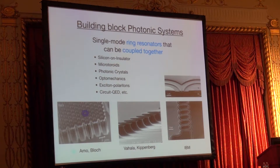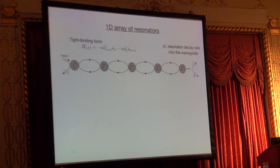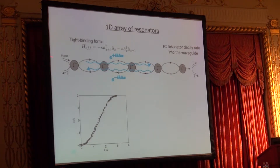The key ingredient we really want is to have ring resonators that can be coupled together. The easiest one is to couple them in a one-dimensional array. Here we have a one-dimensional array of ring resonators coupled to each other. The photons are confined in these resonators at the resonant frequency and they can hop from one resonator to another. This is just a simple tight-binding model — we know the answers: Bloch waves going forward and backward.